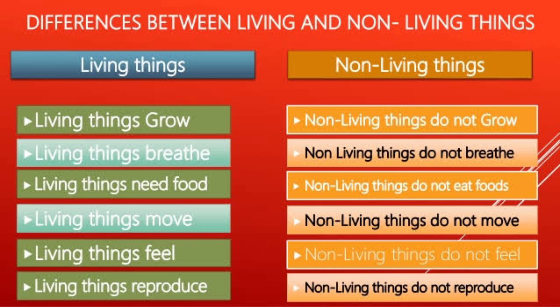After studying non-living things in detail, let's have a glance at the differences between living things and non-living things. Here you can see two partitions — one side about living things, another side about non-living things. Living things grow; non-living things do not grow. Living things breathe; non-living things do not breathe. Living things need food; non-living things do not eat food. Living things move; non-living things do not move. Living things feel; non-living things do not feel. Living things reproduce; non-living things do not reproduce.